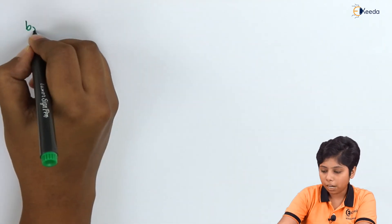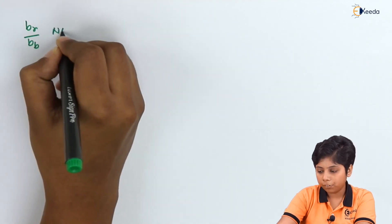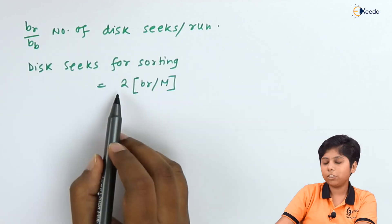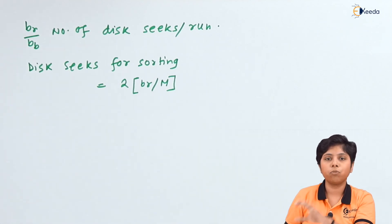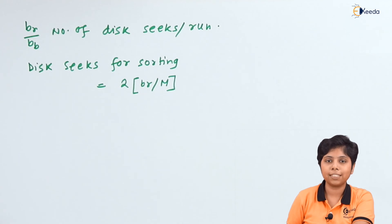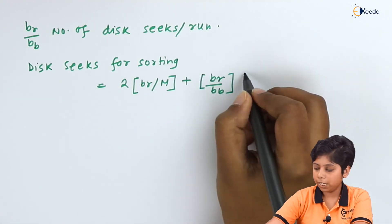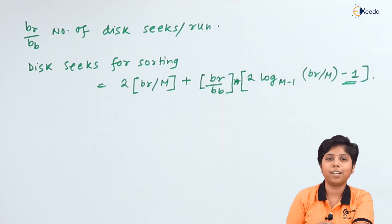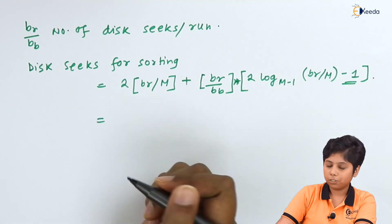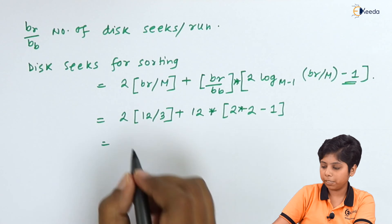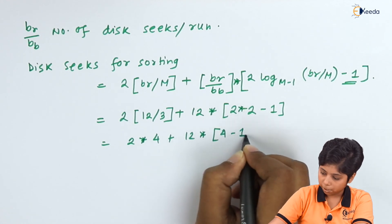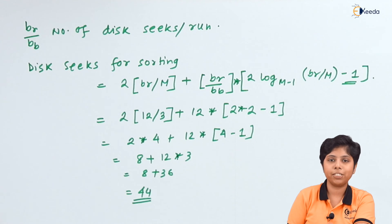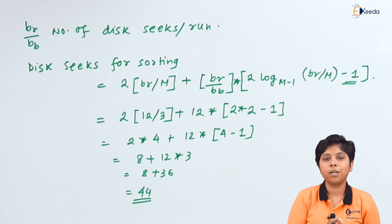For the disk seek cost: for each run we have B_r / BB number of disk seeks, so the total disk seeks are 2 * (B_r / M) — since B_r / M is the number of initial runs — plus log_(M-1)(B_r / M) passes, with the initial seek already accounted for. For our example with B_r = 12: (2 * 4) + (12 * (4 - 1)) = 8 + 36 = 44 disk seeks needed for sorting using the external sort-merge algorithm. This is the cost analysis of sorting in query processing.